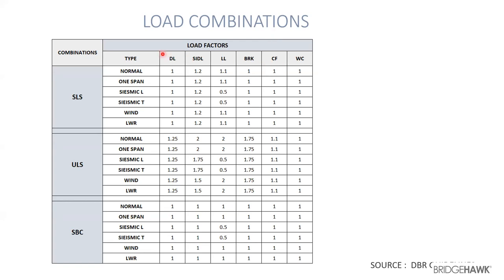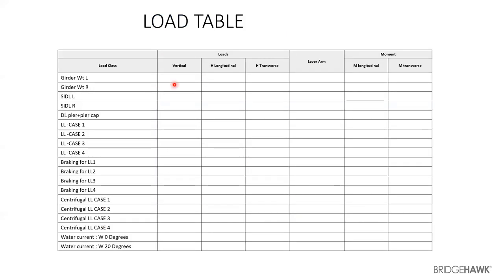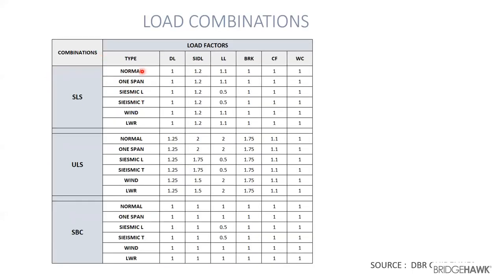The load factors are applied to all the load cases. You multiply the load values by the respective load factors to create your combinations. For example, you take a factor of 1.0 for normal dead load, 1.2 for SIDL, and 1.1 for live load, and accordingly you get the load values and moment values.